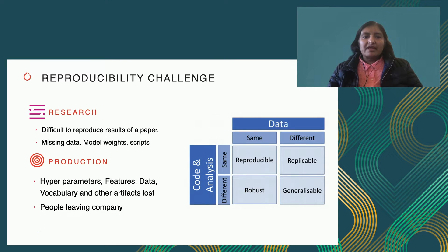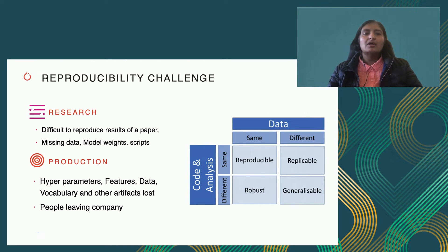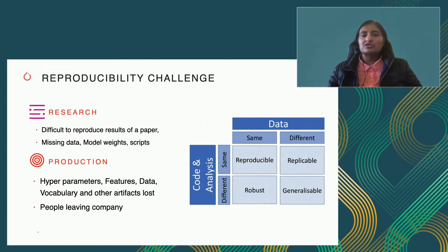In the past few years, there have been many issues on the research side around reproducibility of results. The data is missing, or the model base or the scripts are missing, making it very difficult to reproduce the exact same results from a published research paper. Similar challenges are seen on the production side where hyperparameters changed, or the features or data on which the model was originally trained are not available. The vocabulary used for an NLP model, for example, got lost, and the people who originally created these models are no longer with the company, making it very difficult to get a new version of those models.